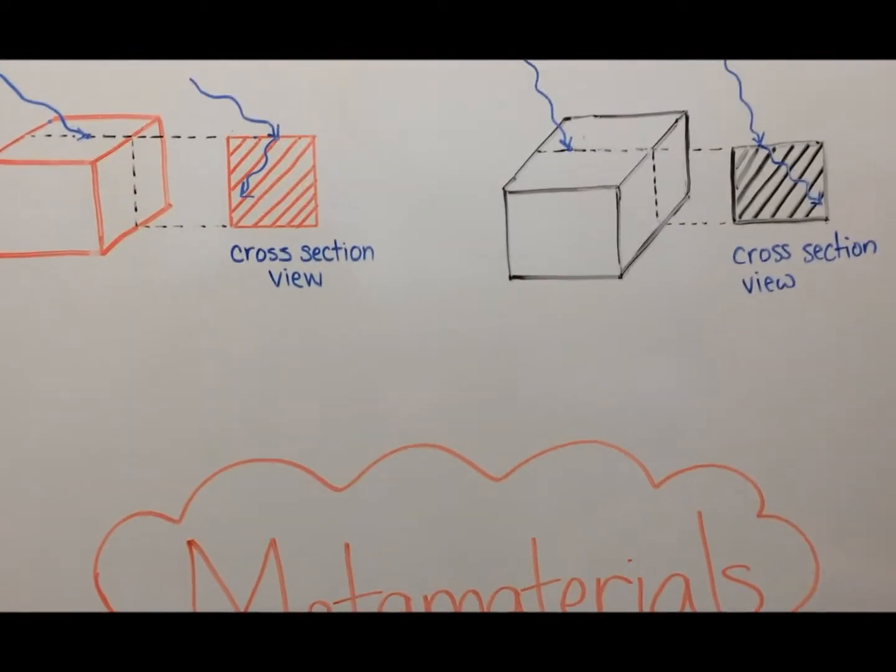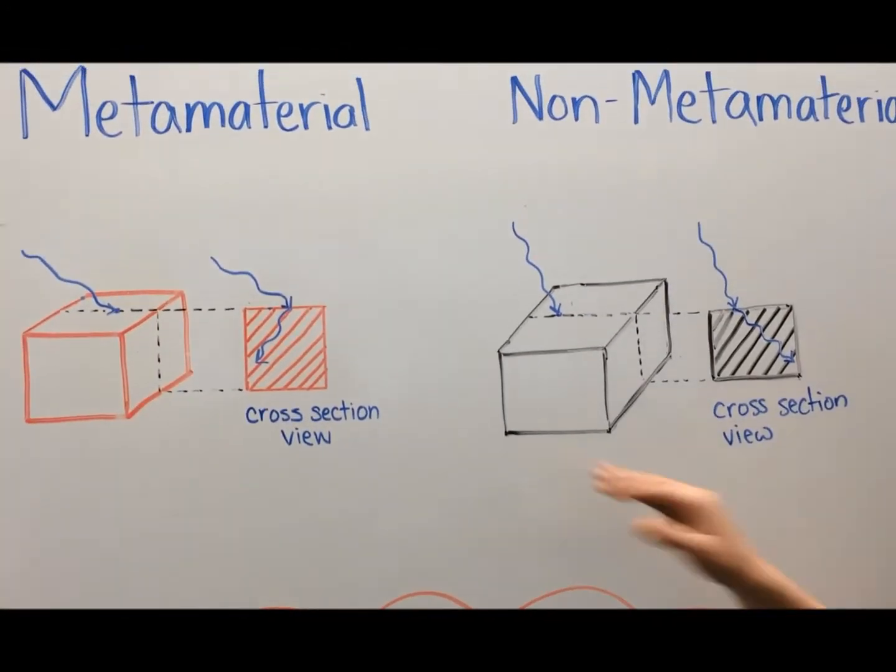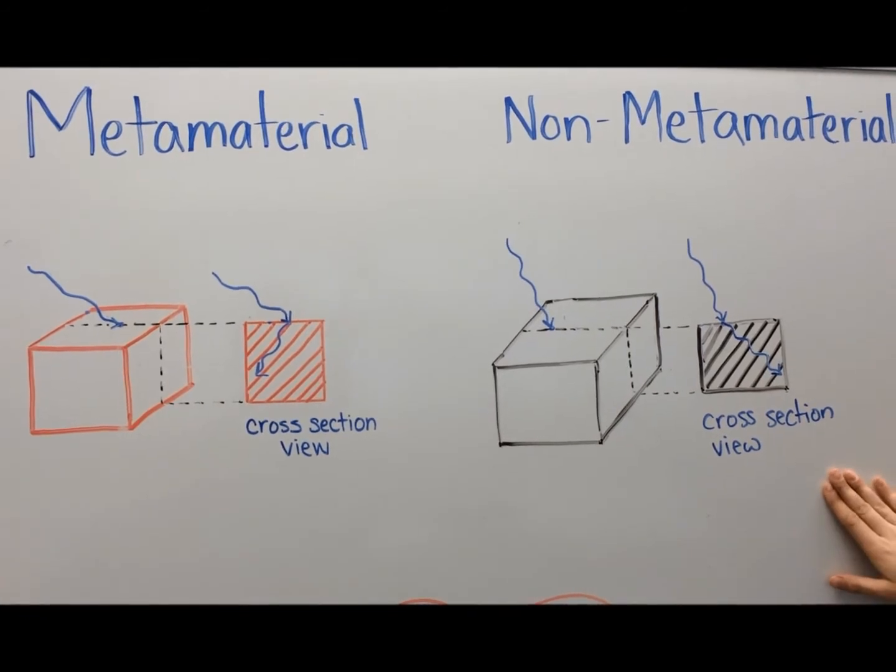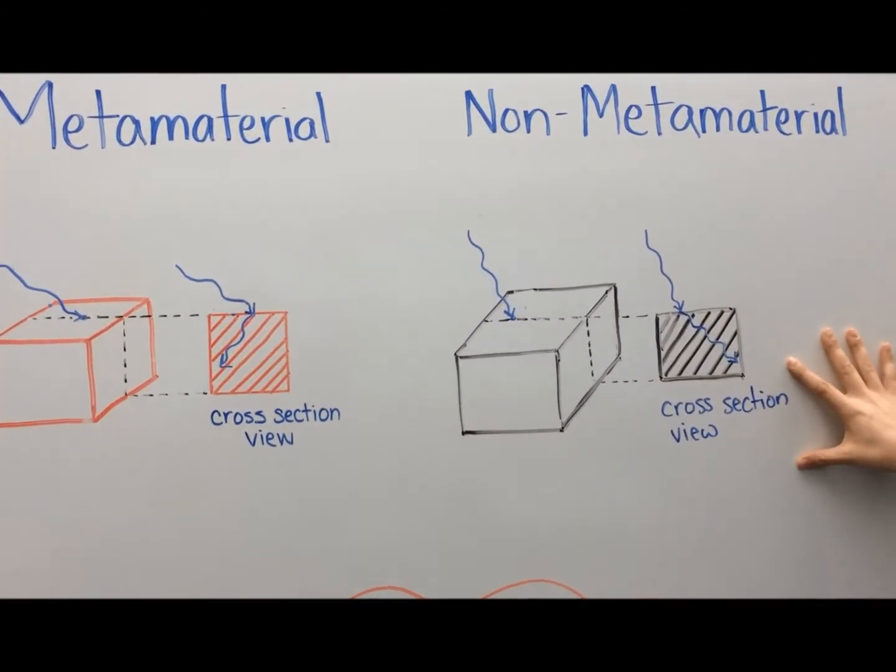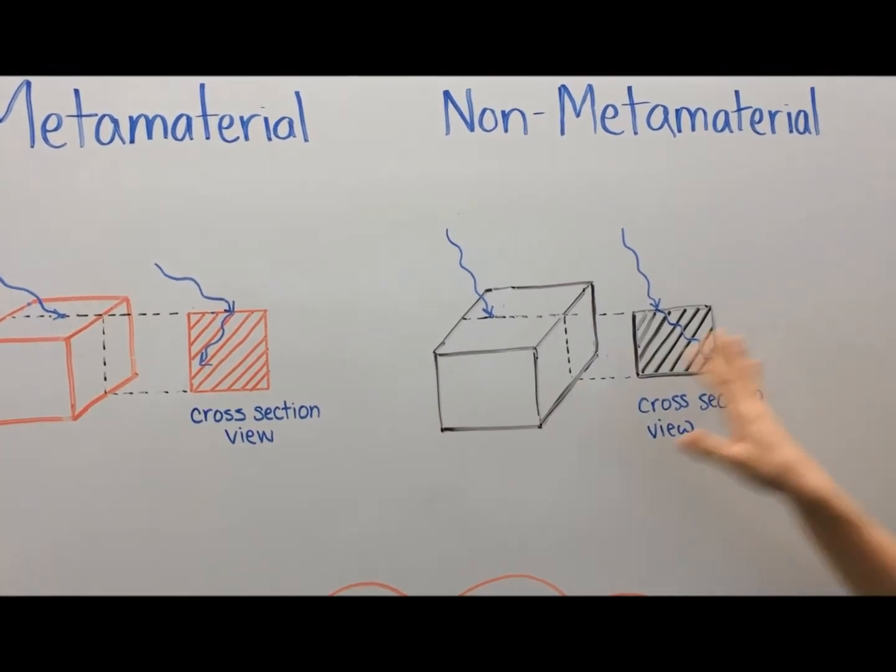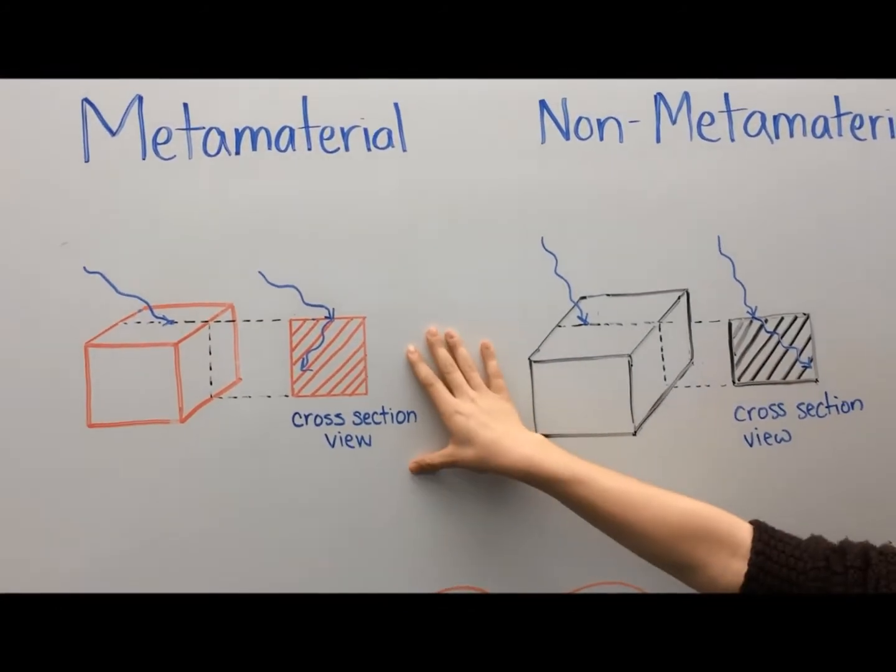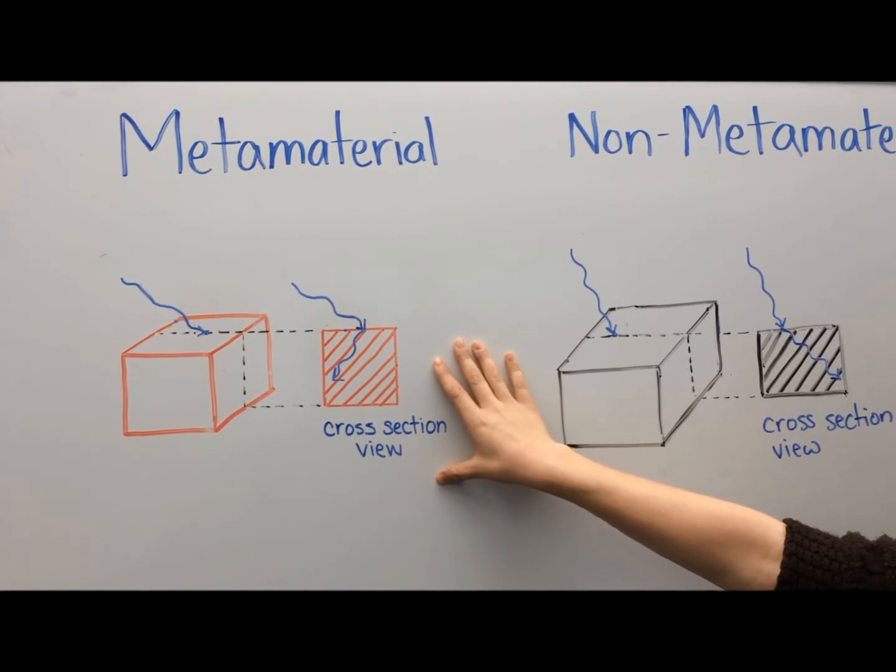Here we have an example of one of those properties. Here is a metamaterial and a non-metamaterial. In the non-metamaterial, this wavelength refracts at an angle that we would expect. In the metamaterial, the wavelength actually refracts in a negative manner.